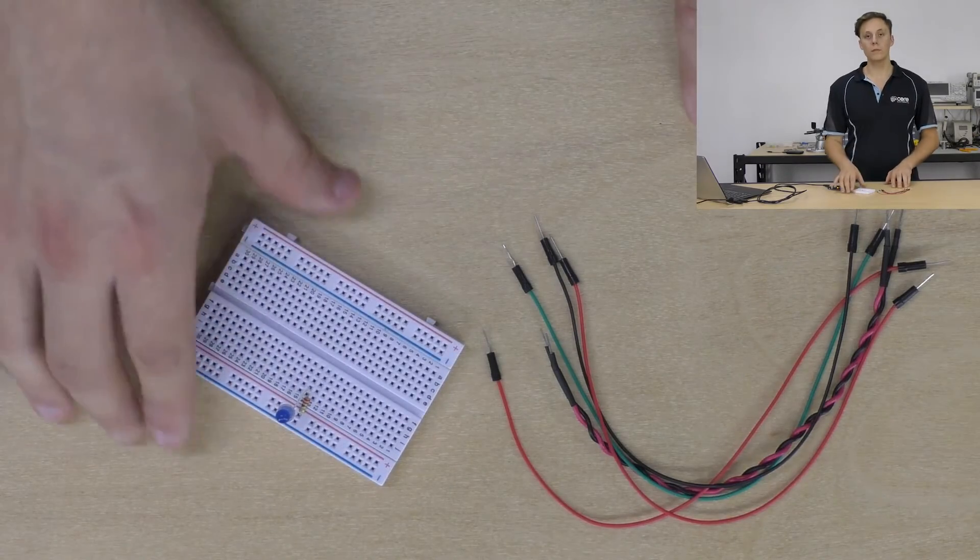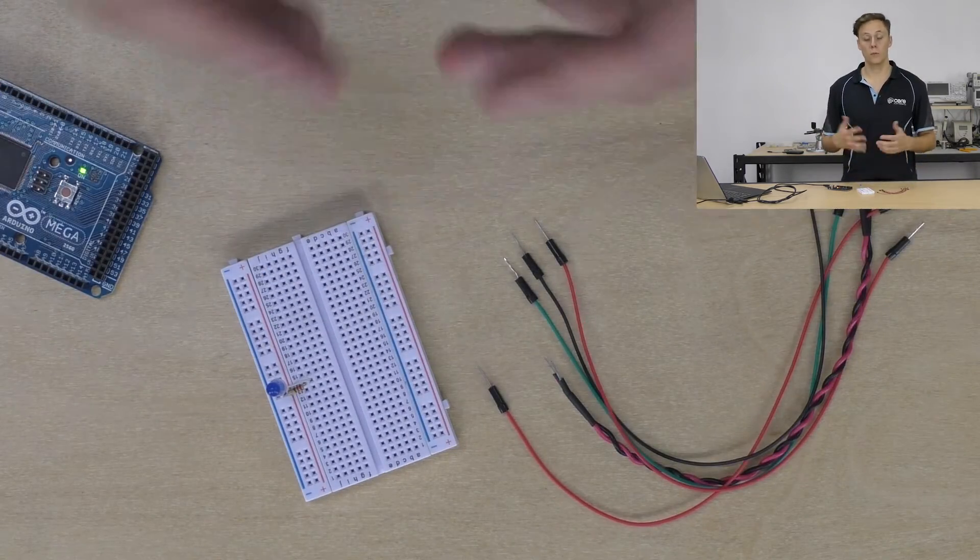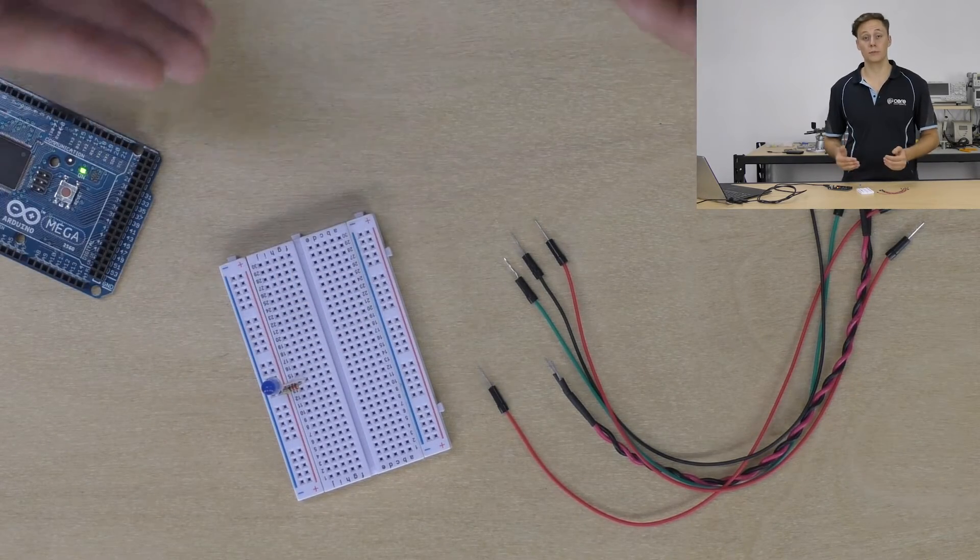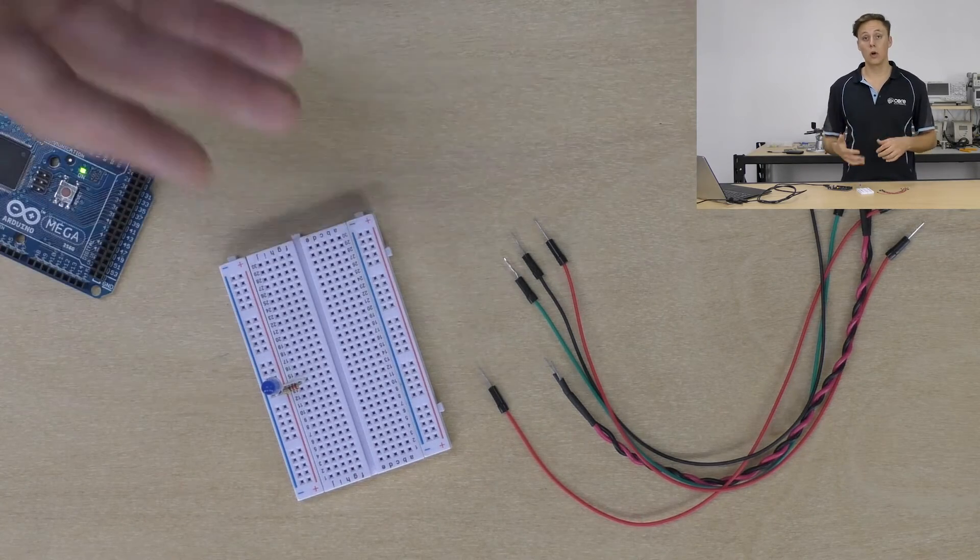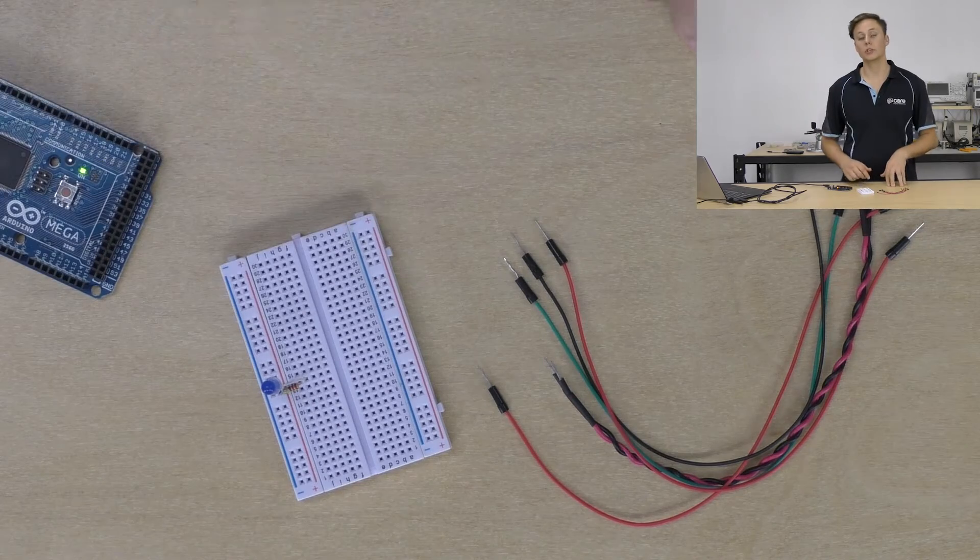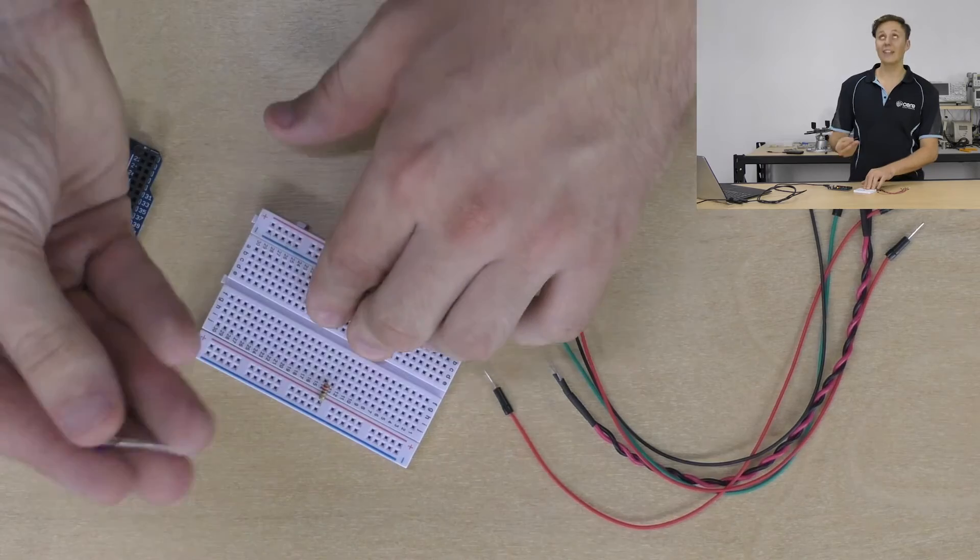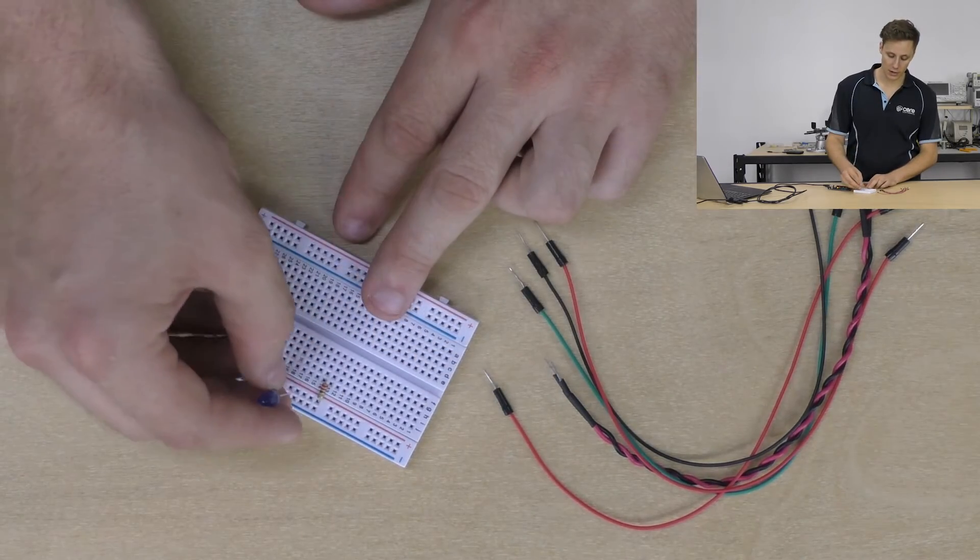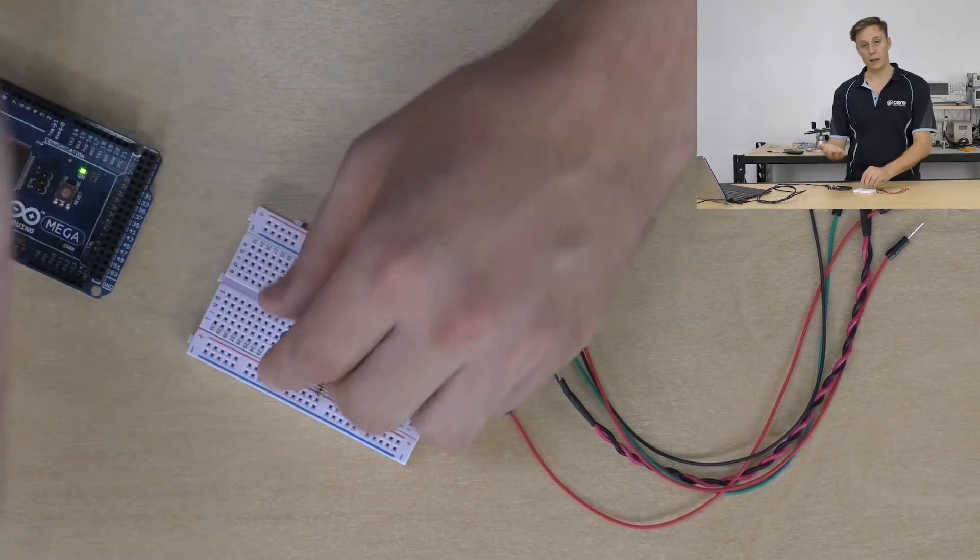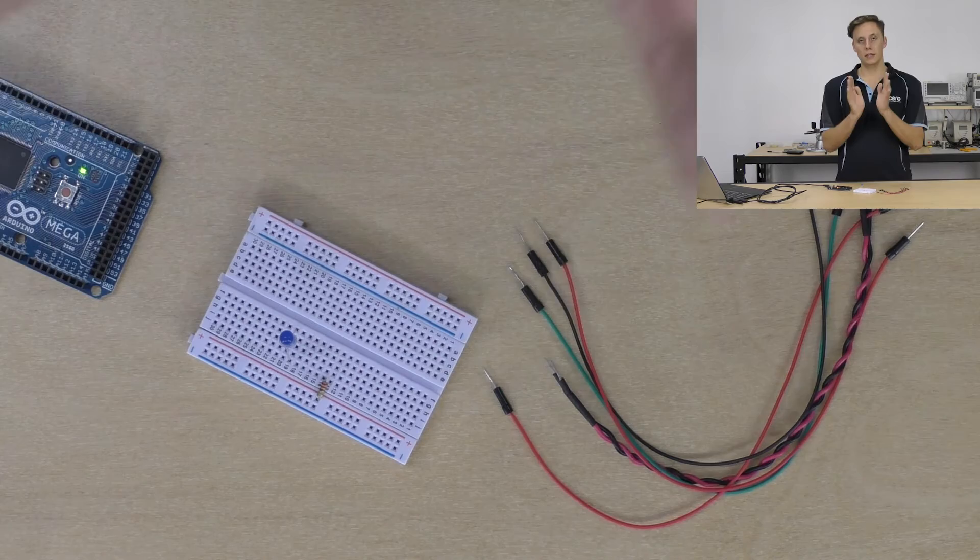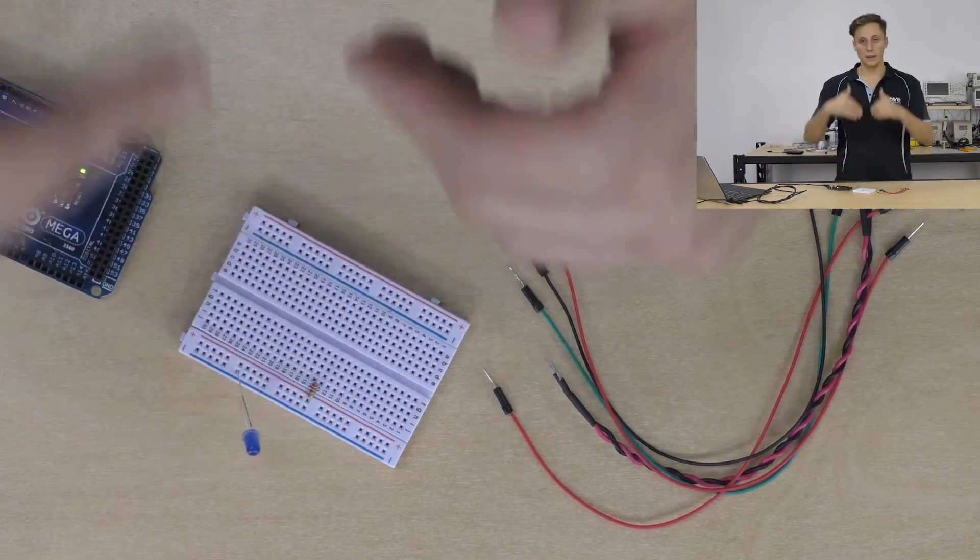Now a breadboard is a plastic board with 0.1 inch or 2.54 millimeter spaced holes and that's a standard unit of measurement for electronic components. IC chips, capacitors and things like that will often be designed to fit into 0.1 inch spaced holes. So we can see I've got an LED and a resistor here and they just go in the legs and you insert them into the holes like this.